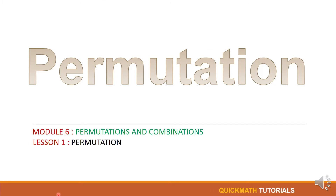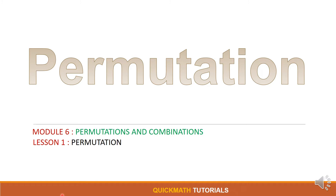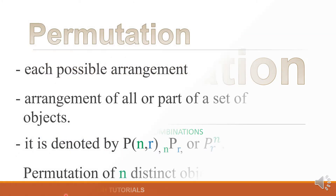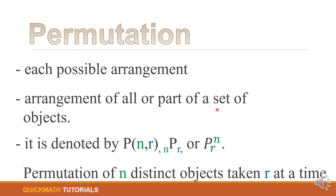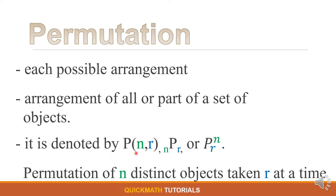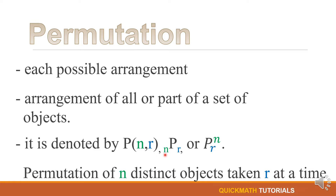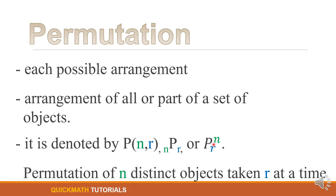Good day everyone, welcome to another episode of Quick Math Tutorials. Today we are going to learn about permutation. Permutation means each possible arrangement, or it is the arrangement of all or part of a set of objects. It is denoted by P(n, r), or in some books we have sub-n P sub-r.